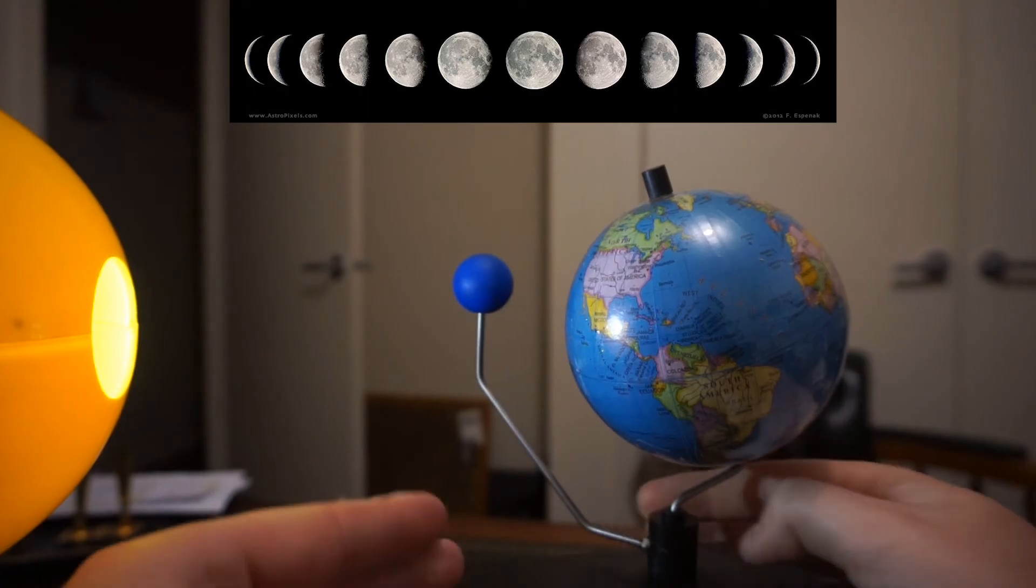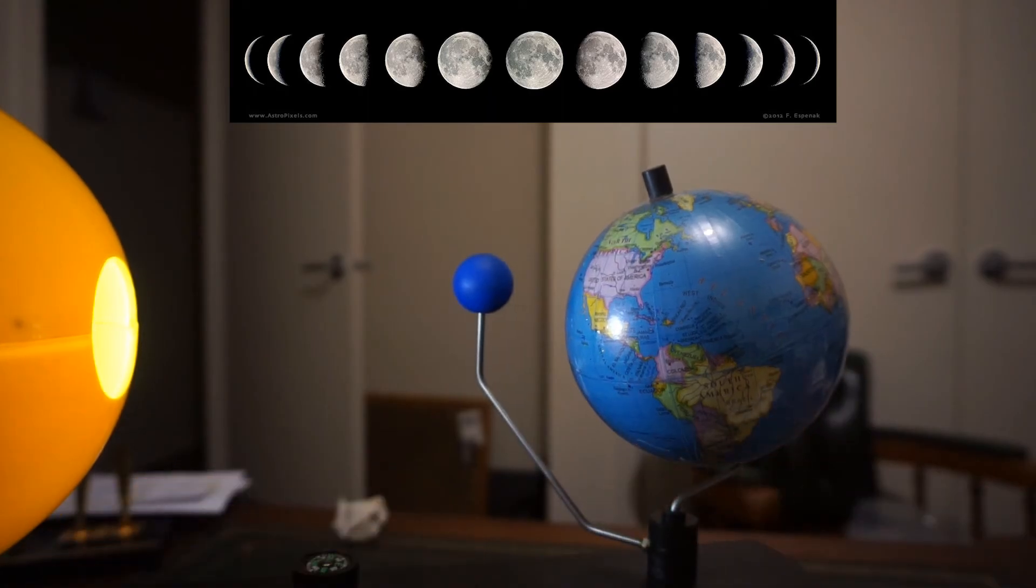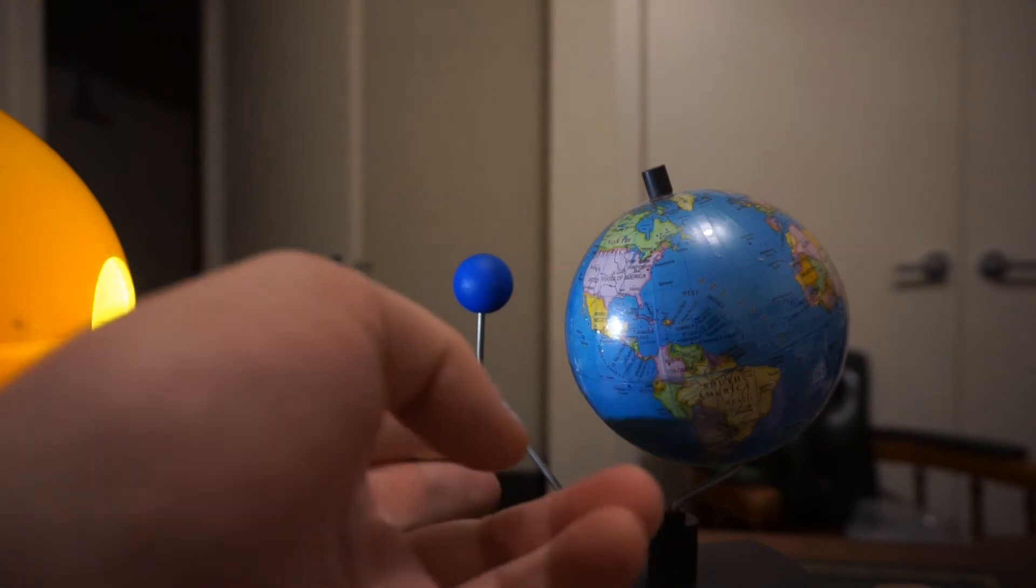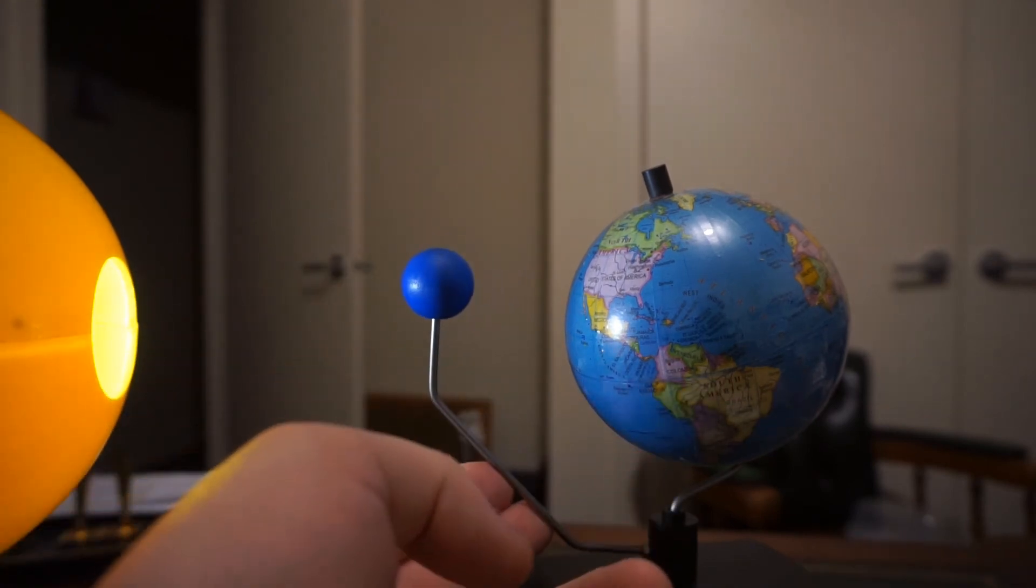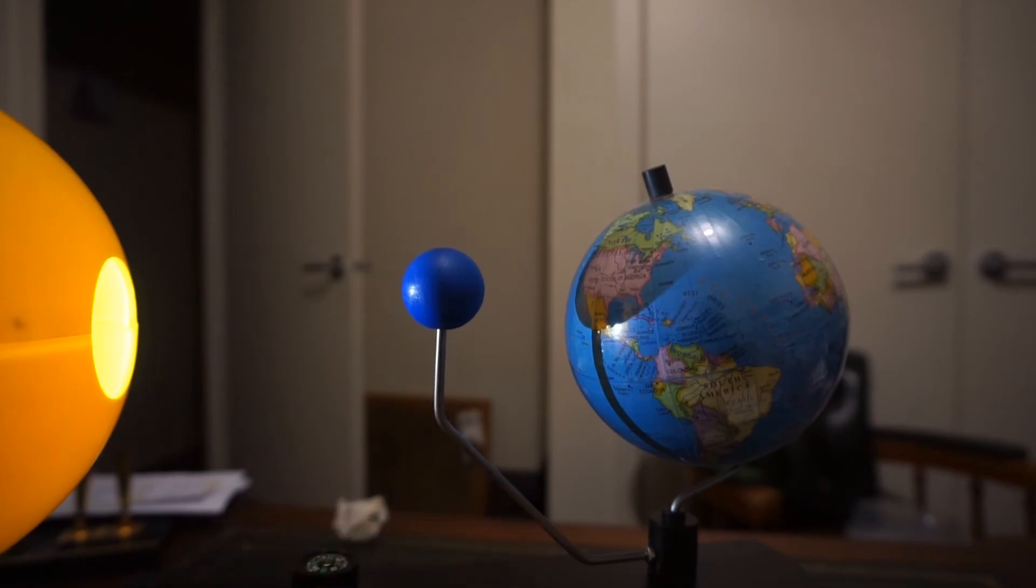At night, we can see different parts of the Moon based on how much light is reaching it from the Sun. When the Moon passes between the Sun and the Earth, it casts a shadow on the Earth, because it's blocking the sunlight from reaching that area.